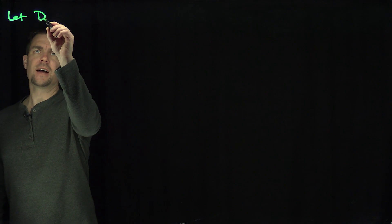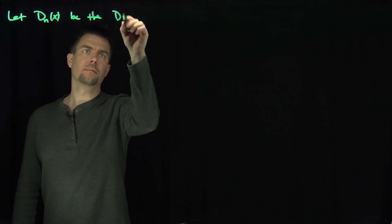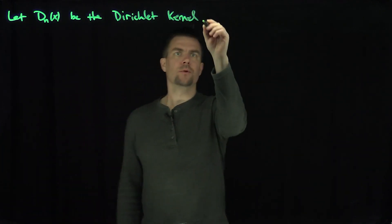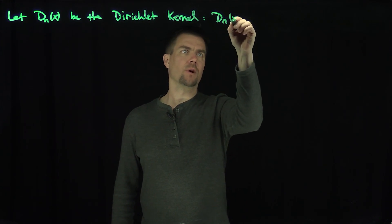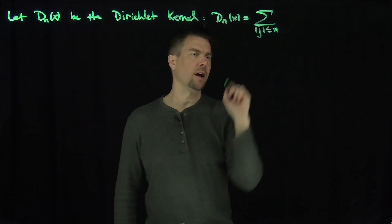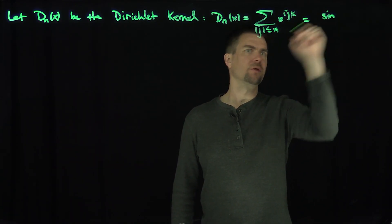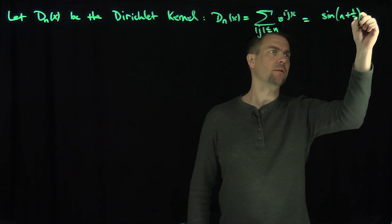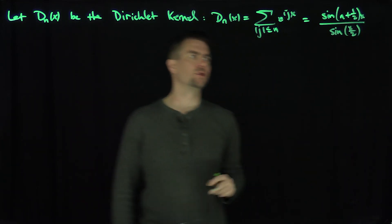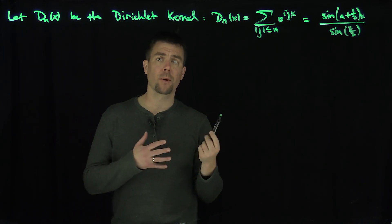Let dN of x be the Dirichlet kernel. We already know what this is: dN of x is the sum over all frequencies whose absolute value cannot exceed n, of e to the ijx. We have a formula for this from a previous video: it's the sine of (n plus 1/2)x over the sine of x over 2.